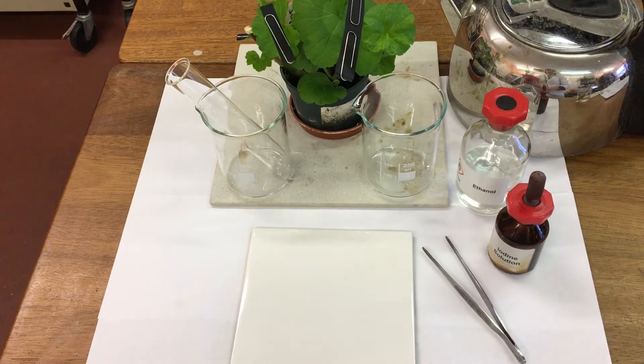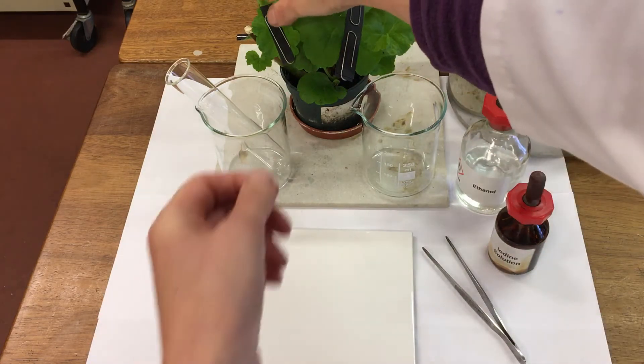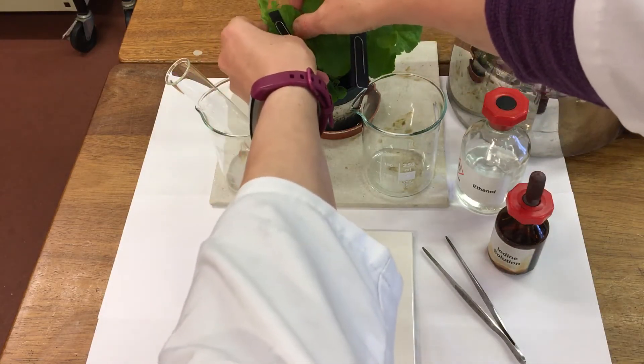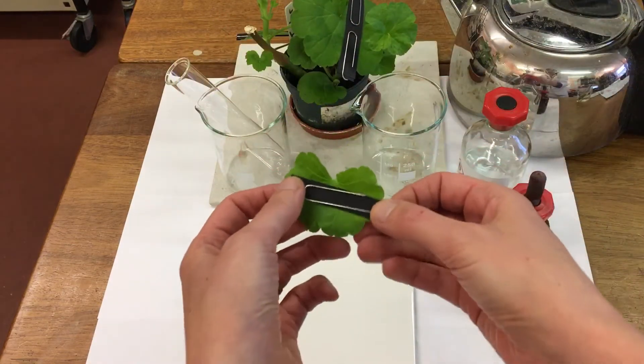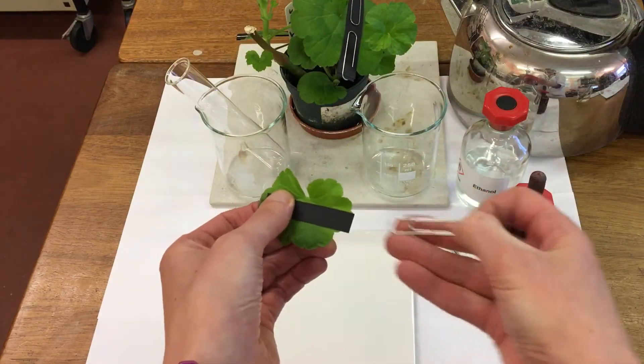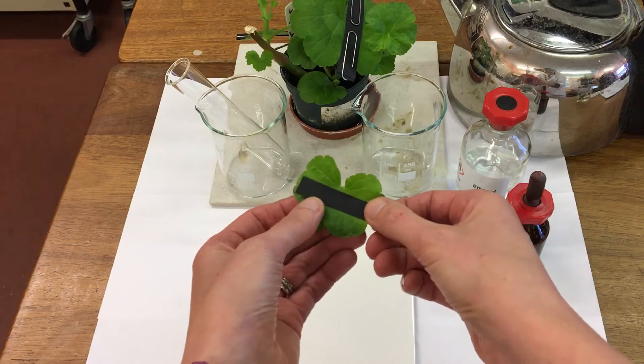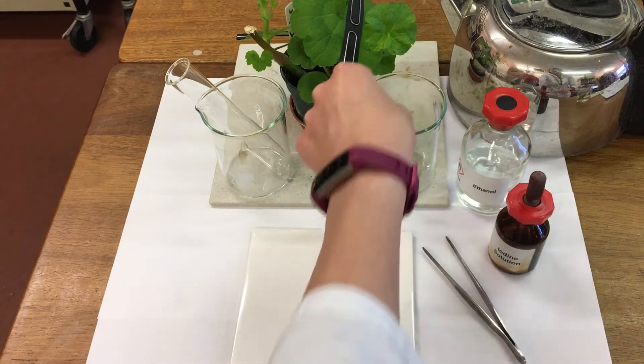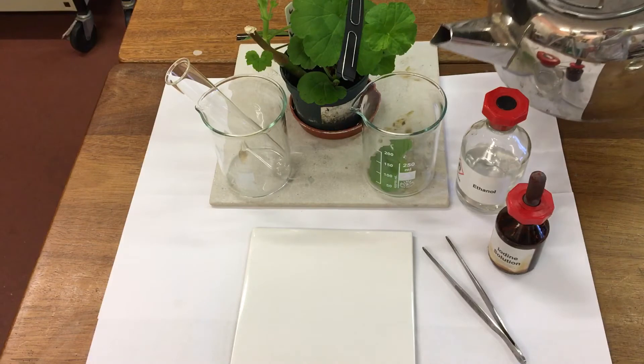So to test the leaf for starch, first of all we're going to take our leaf, we're going to remove the mask and pop it in some freshly boiled water.